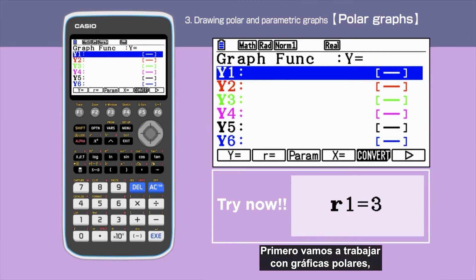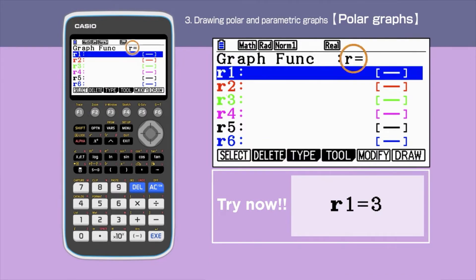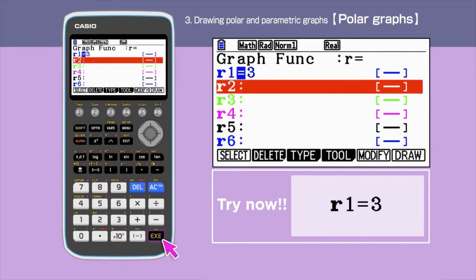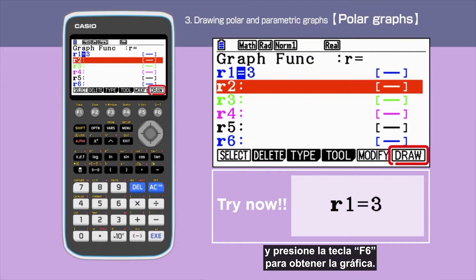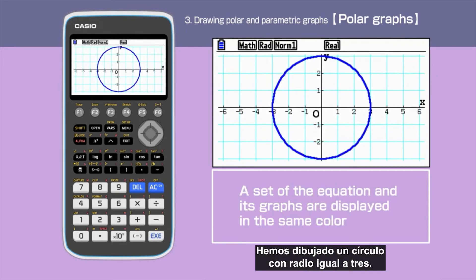First, we are going to look at polar graphs. Press F2 to select the calculator to polar mode. Enter 3 in R1 and press F6 to draw the graph. We have drawn a circle with radius 3.